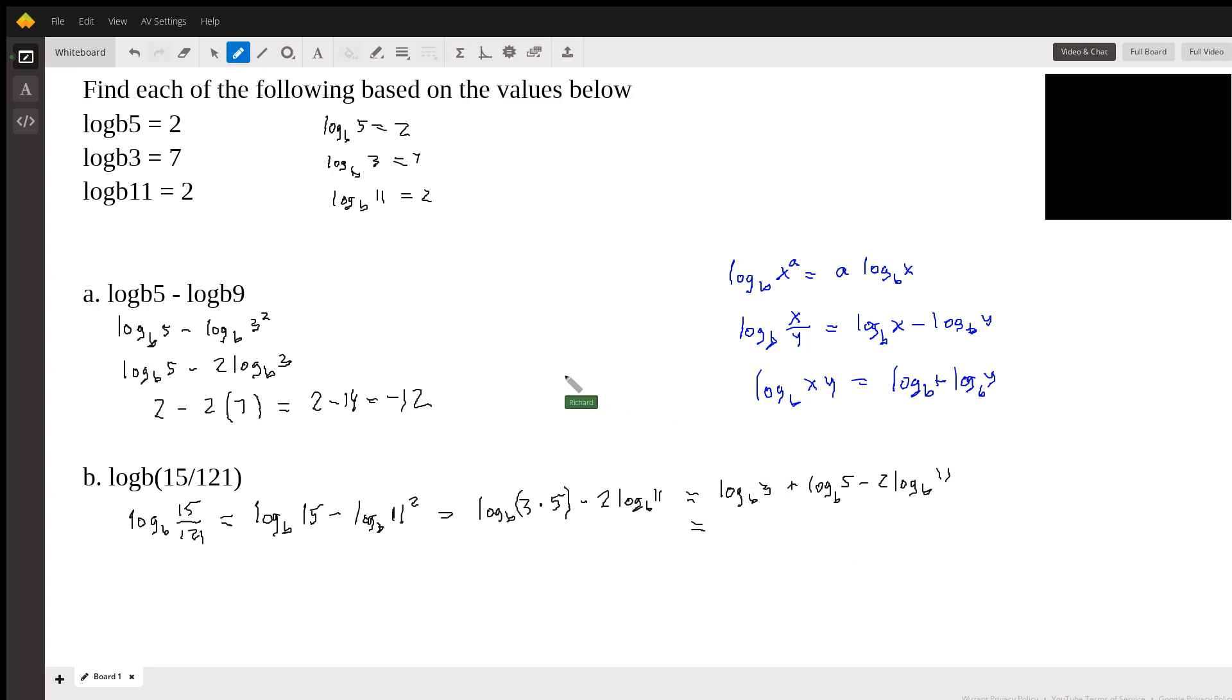And now I can just look these up. So log base B of 3 is 7, log base B of 5 is 2 minus 2, log base B of 11 is 2. So that's going to be 9 minus 4, which is 5.